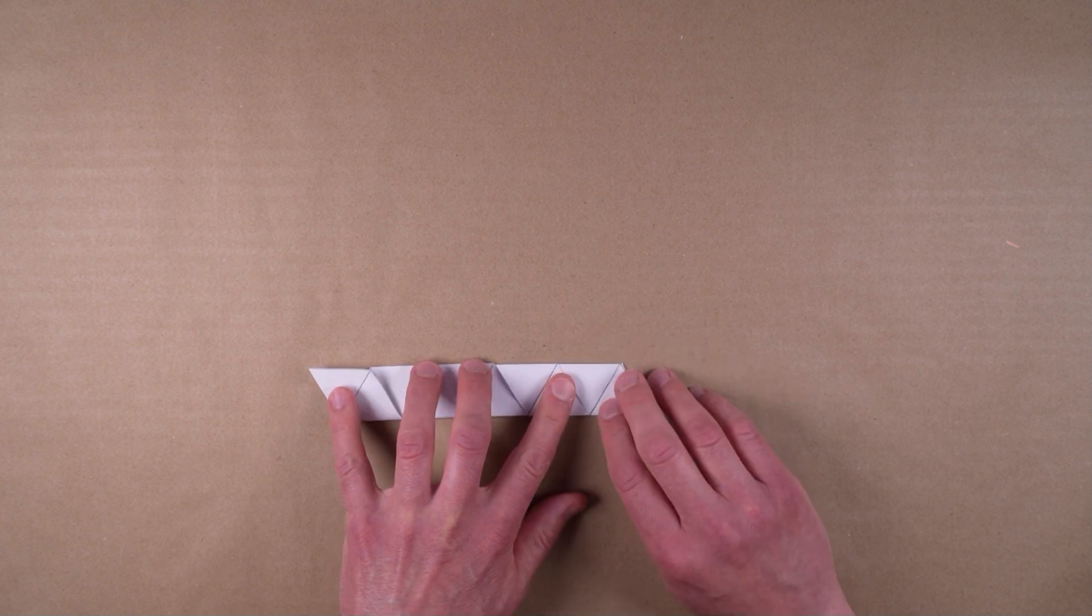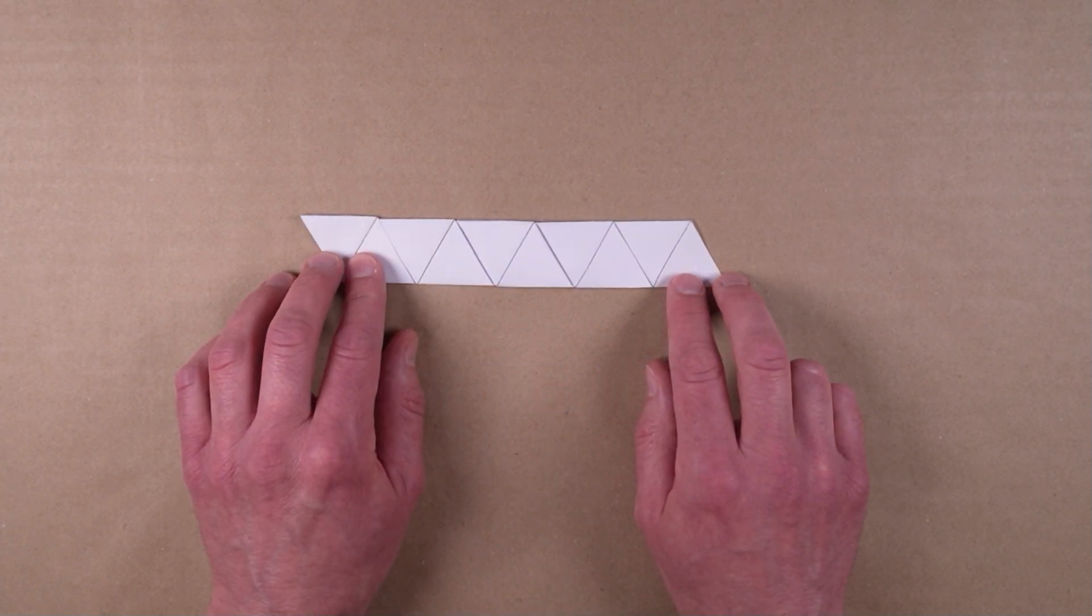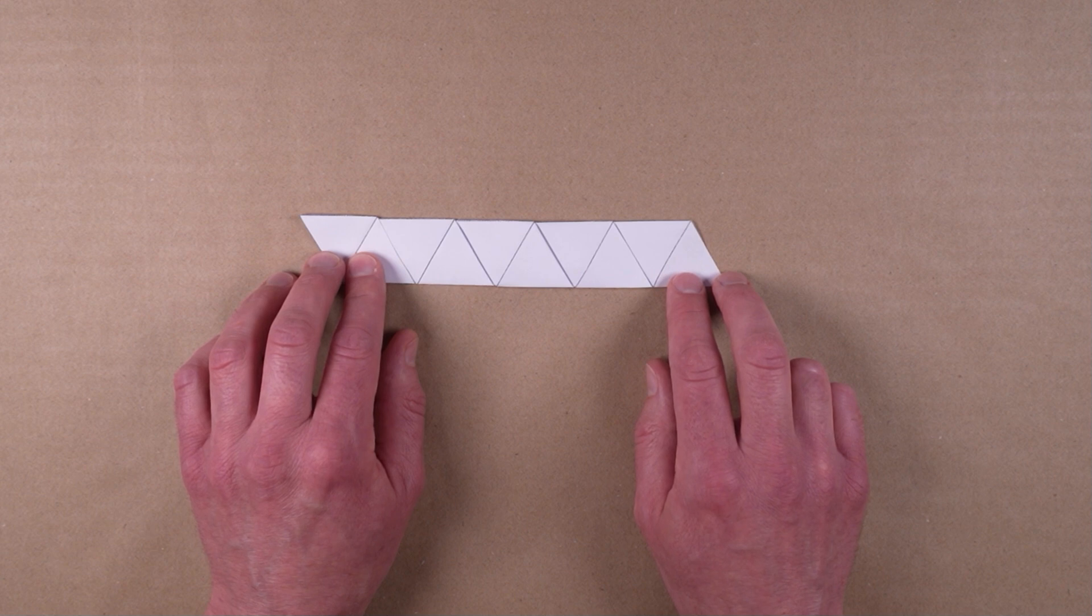When done, you should have a multi-layered strip with 10 triangles showing on each side. Notice that what we have here is essentially a layered version of the trihexaflexagon template. We'll finish constructing our hexahexaflexagon by following the steps used to make a trihexaflexagon.